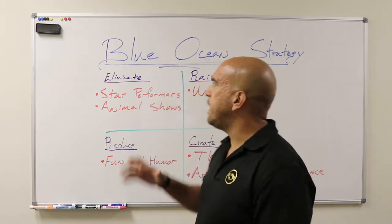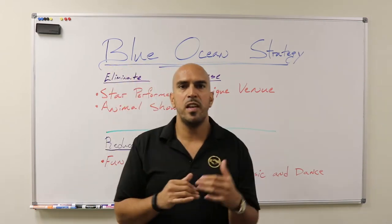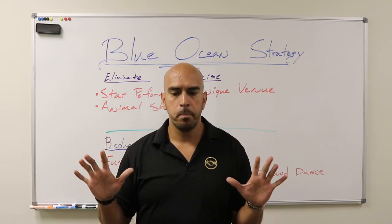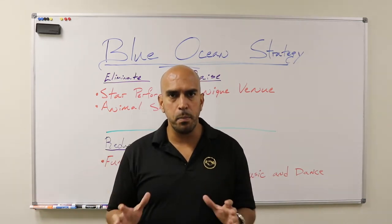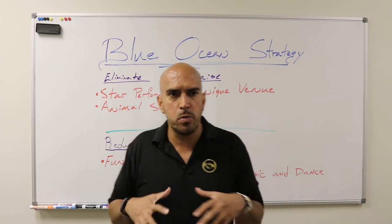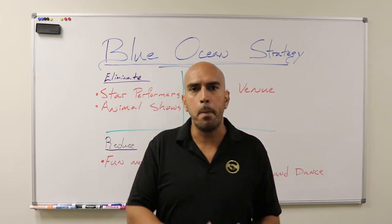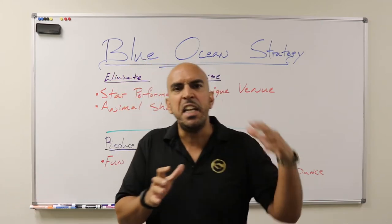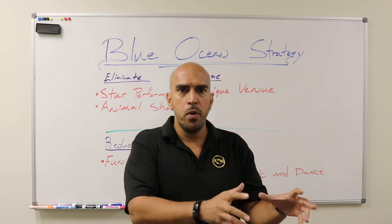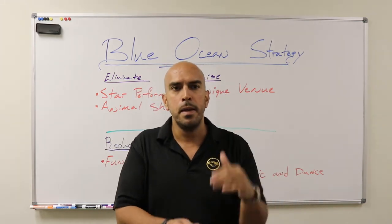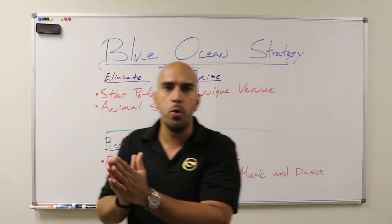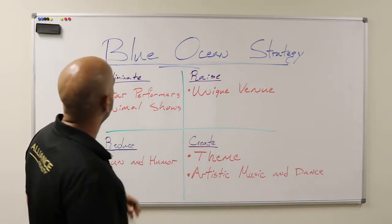First, let me explain the term blue ocean. The book says there's a blue ocean and there's a red ocean - two types of oceans. The red ocean is red because there's so much competition, companies competing and fighting each other, there's blood on the water. A blue ocean is something new, something different, a new market. You've got to figure out how to move from the red ocean and create a blue ocean.